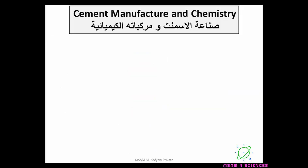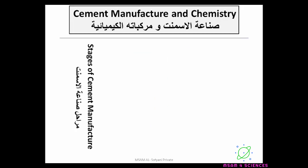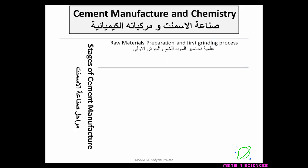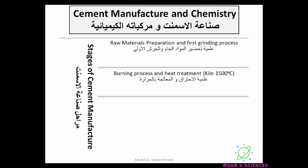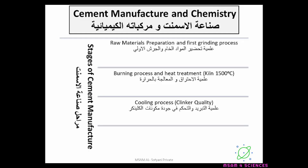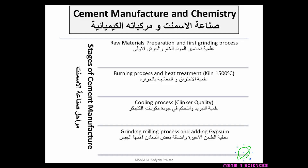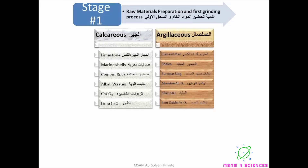Cement manufacture and chemistry. Cement is made through four different stages. Stage one: raw materials preparation and first grinding process. Stage two: burning process and heat treatment. Stage three: cooling process and controlling the clinker quality. Stage four: grinding, milling process, and adding gypsum.